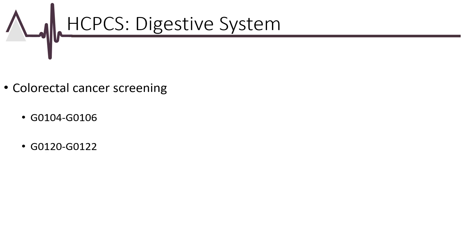When a Medicare patient is screened for a malignant neoplasm of the GI tract, Medicare utilizes different codes found in HCPCS Level 2. Codes G0104 through G0106 and G0120 through G0122 are used when performing a sigmoidoscopy, colonoscopy, or barium enema when screening for GI malignancies on Medicare patients. As a coding tip, cross-reference these codes in the CPT book with the colonoscopy codes.